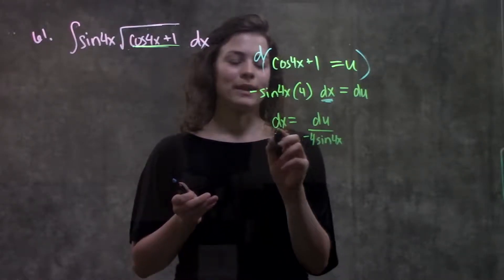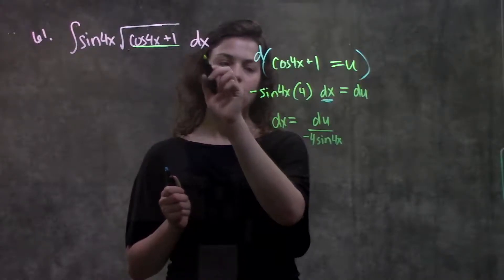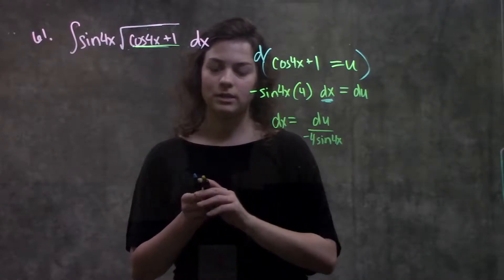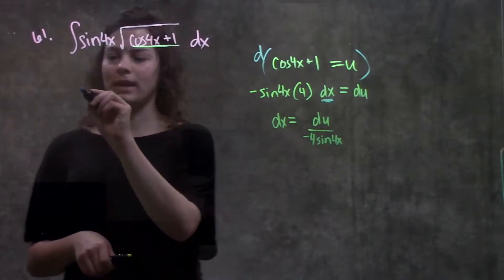So now I have a value for dx that I can plug into my equation, and I have a part of my function set equal to u that I can plug back into my equation. So let's plug those things in and see what happens.